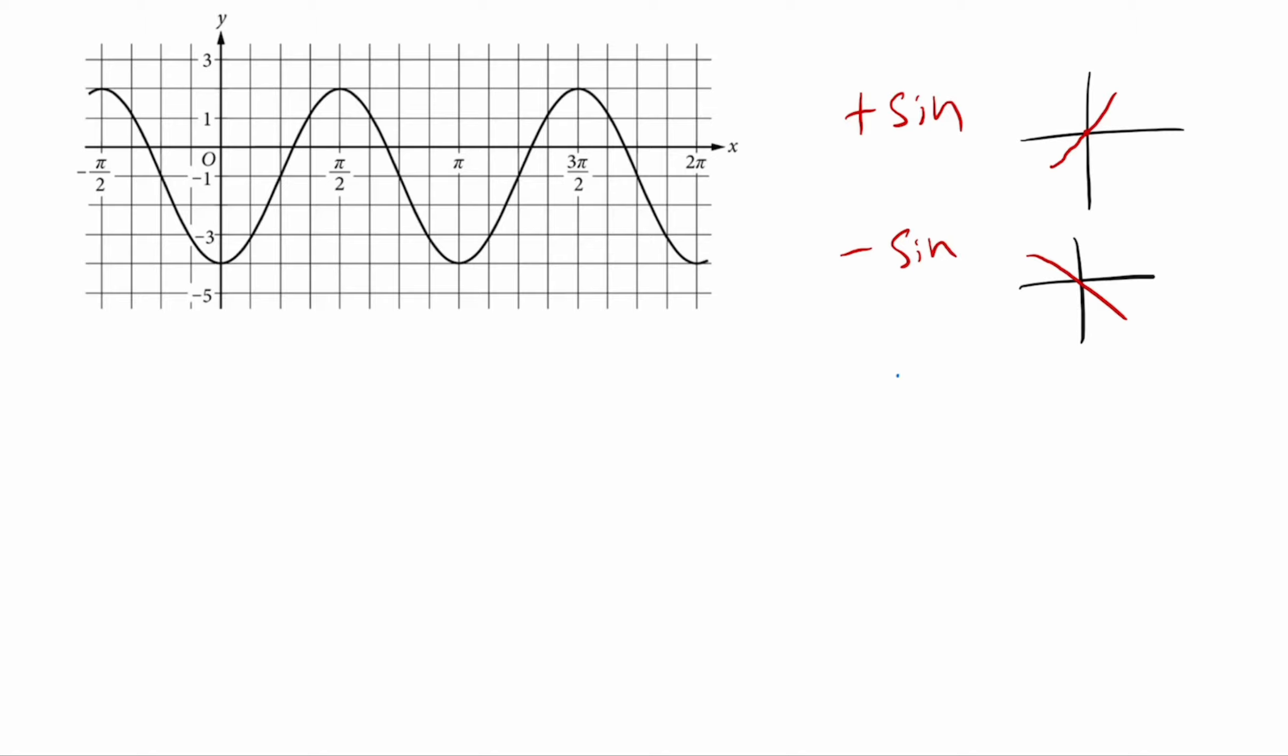A positive cosine would start at the maximum, so it starts up here, and the usual trig function beyond that. And then a negative cosine starts at the minimum.